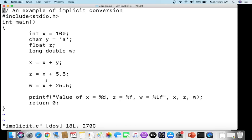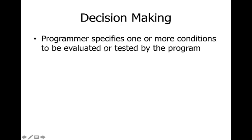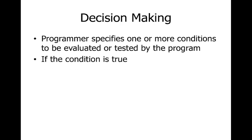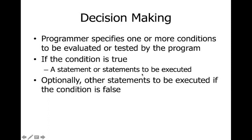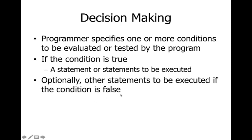If you want to check some condition and skip certain statements, or do something based on a condition, you use the if statement or decision-making statements. A programmer specifies one or more conditions to be evaluated by the program. If a condition is true, a statement or set of statements will be executed.